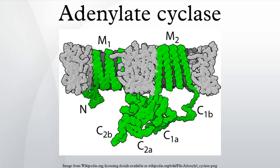The important parts for function are the N-terminus and the C1 and C2 regions. The C1 and C2 subdomains are homologous and form an intramolecular dimer that forms the active site. In Mycobacterium tuberculosis, the ACIII polypeptide is only half as long, comprising one 6-transmembrane domain followed by a cytoplasmic domain, but two of these form a functional homodimer that resembles the mammalian architecture.